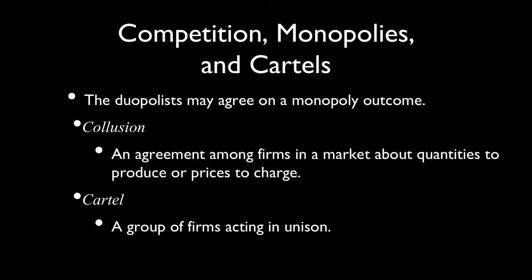Duopolists might attempt to agree on a monopoly outcome. They could enter into a price-fixing agreement, collude with one another through an informal agreement about how much to produce and what prices to charge, or form a formal organization called a cartel. In America, cartels are illegal, though they are legal in other countries. One very important cartel is OPEC — the Organization of Petroleum Exporting Countries — responsible for maintaining the price of oil and indirectly the price of gasoline. However, even OPEC has a hard time acting in unison as a formal organization.